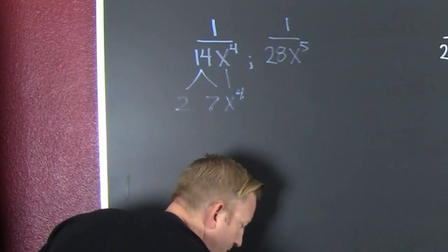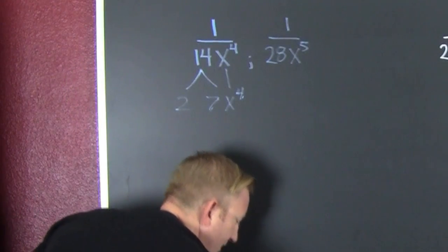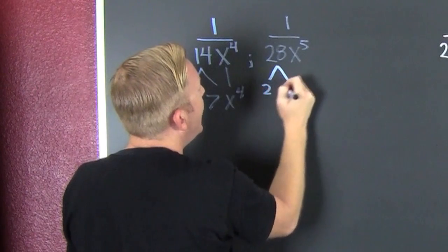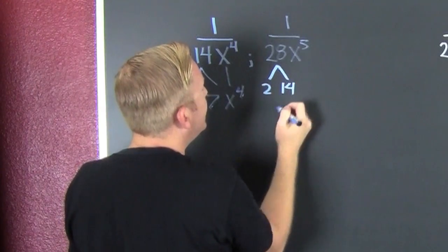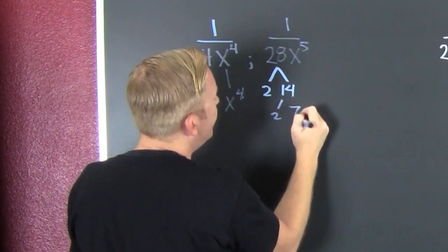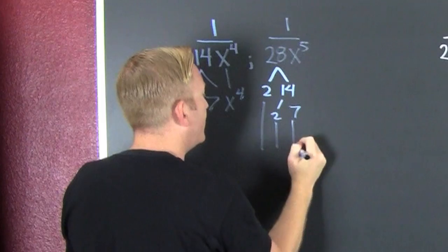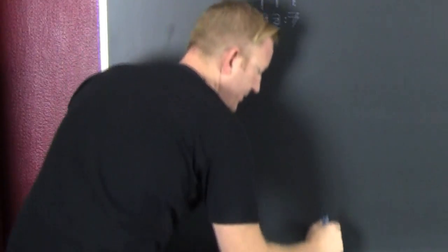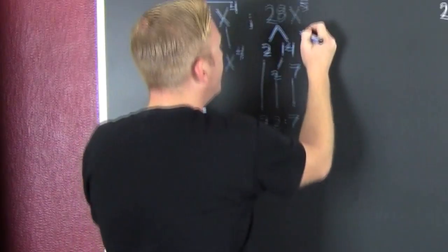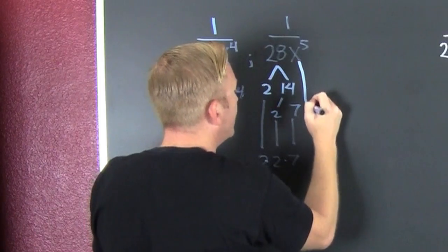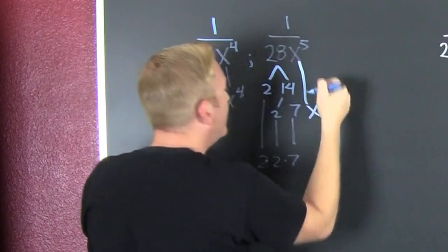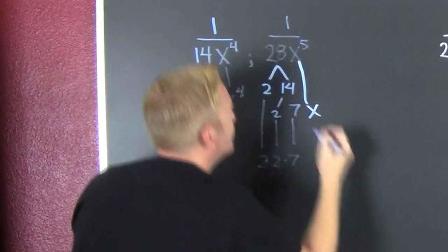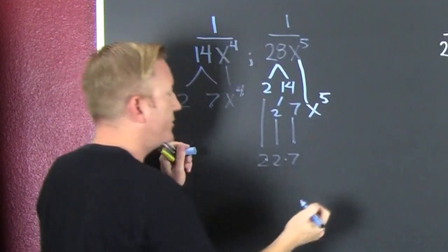So this is two and 14 — and two and seven. Bring them down: two, two, and seven. And that's X to the five.